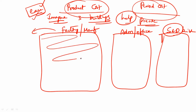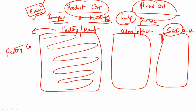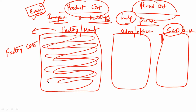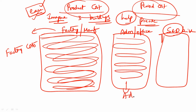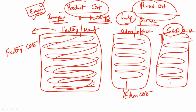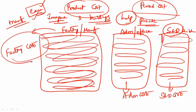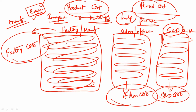All the costs incurred inside the factory building will be referred to as factory cost. All the costs inside the administration building will be referred to as administration cost. All the costs inside the selling and distribution building will be referred to as selling and distribution cost. So any manufacturing company has three types of costs broadly.